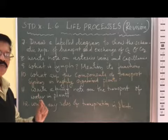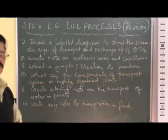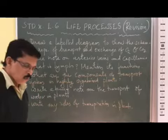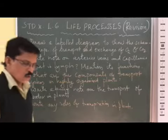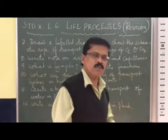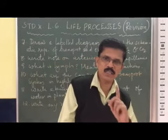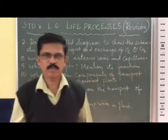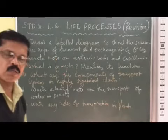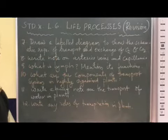Arteries starting from the heart go to various organs. When the arteries enter the organs and tissues, they divide into very thin blood vessels that are only one cell thick. Such very thin blood vessels, one cell thick, are called capillaries.